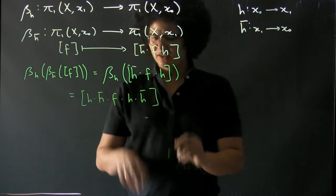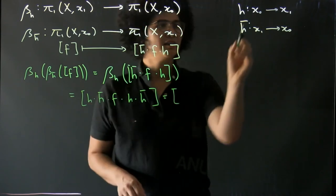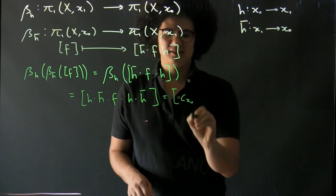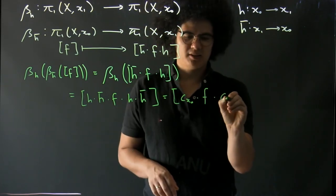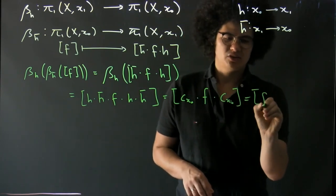But now h h bar is a loop at x₀, and again h h bar is a loop—sorry, x₀. So this is just f, and so we've shown that these change of base point maps are isomorphisms.